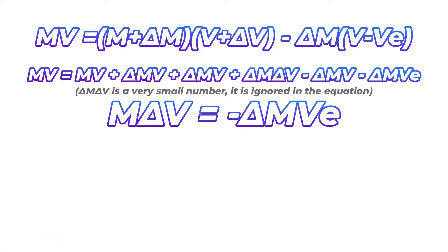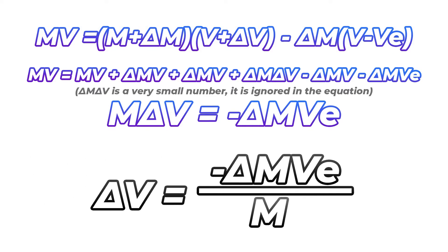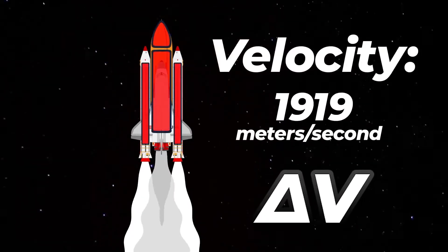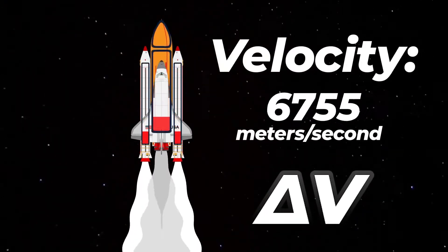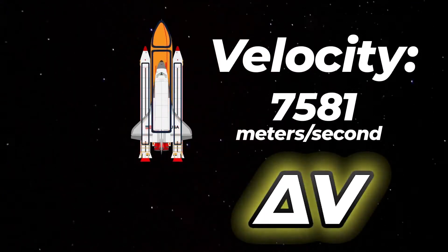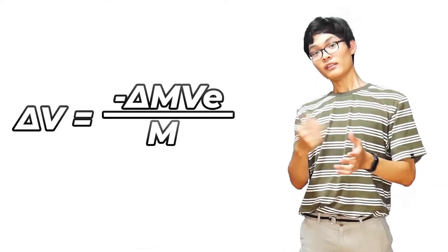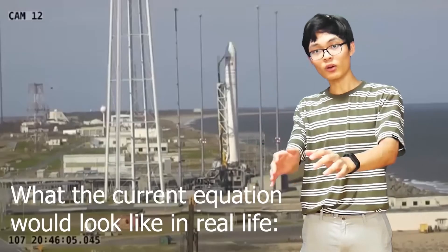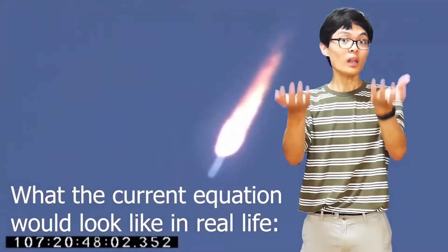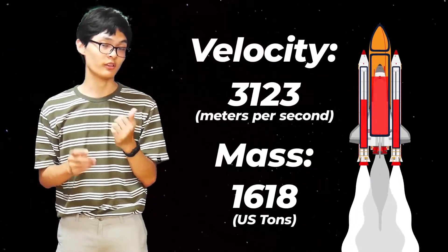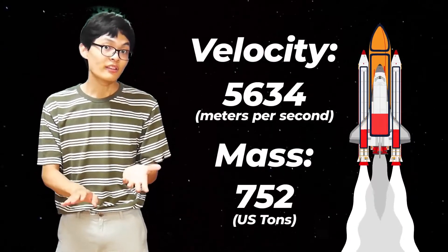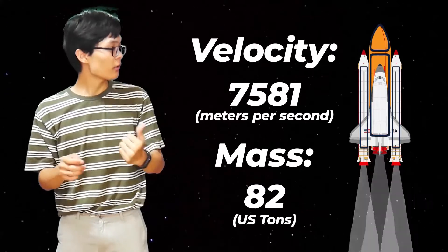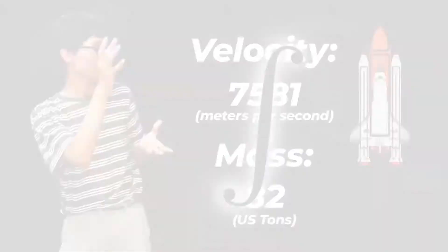After a bit of multiplication and rearranging, we get this equation. It tells us what delta V is — the change in velocity that a spacecraft can get by using up all of its fuel. But this equation only shows us a single change in mass and velocity, as if a rocket dumped all of its fuel at once and gained all of the velocity at once. But rockets have a constant change in mass and velocity, as the weight gets lighter and the speed gets faster. To calculate this constant change, we need to integrate it.